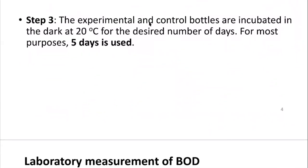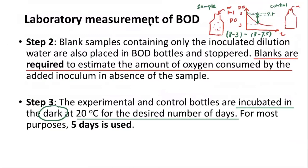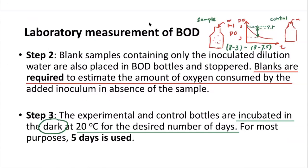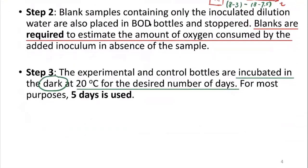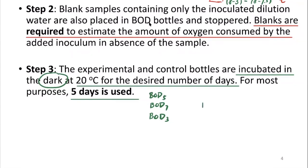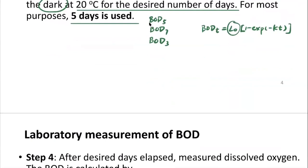The third step is to incubate the bottles in the dark at 20 degrees Celsius. The reason to do it in the dark is that there may be photosynthesizing bacteria inside that we don't want to sustain. Normally people use five days — that's why you hear the term BOD5. In experiments you may also have BOD7 or BOD3. We can then use BOD_t = L0(1 - e^{-KT}) to calculate what is the ultimate BOD.